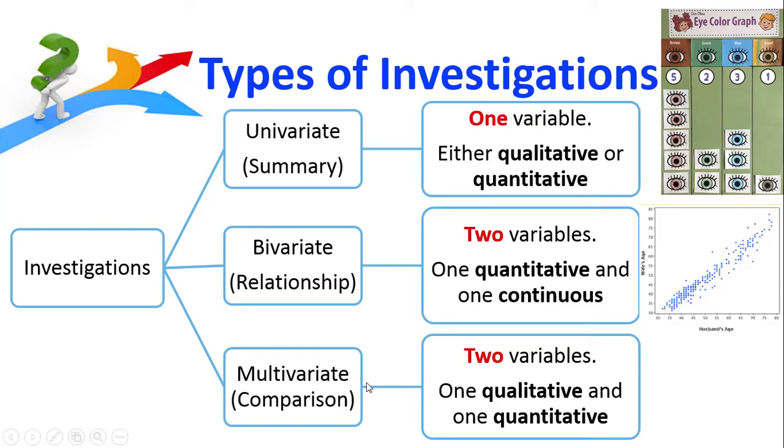The one that we're going to be doing for this particular standard is multivariate. And so in a multivariate one we're looking at comparing something, so we need to have two variables. Now one of those variables is going to be qualitative, so one of them is going to be a group. So you might be comparing eye color, you might be comparing gender, you might be comparing ethnicities.